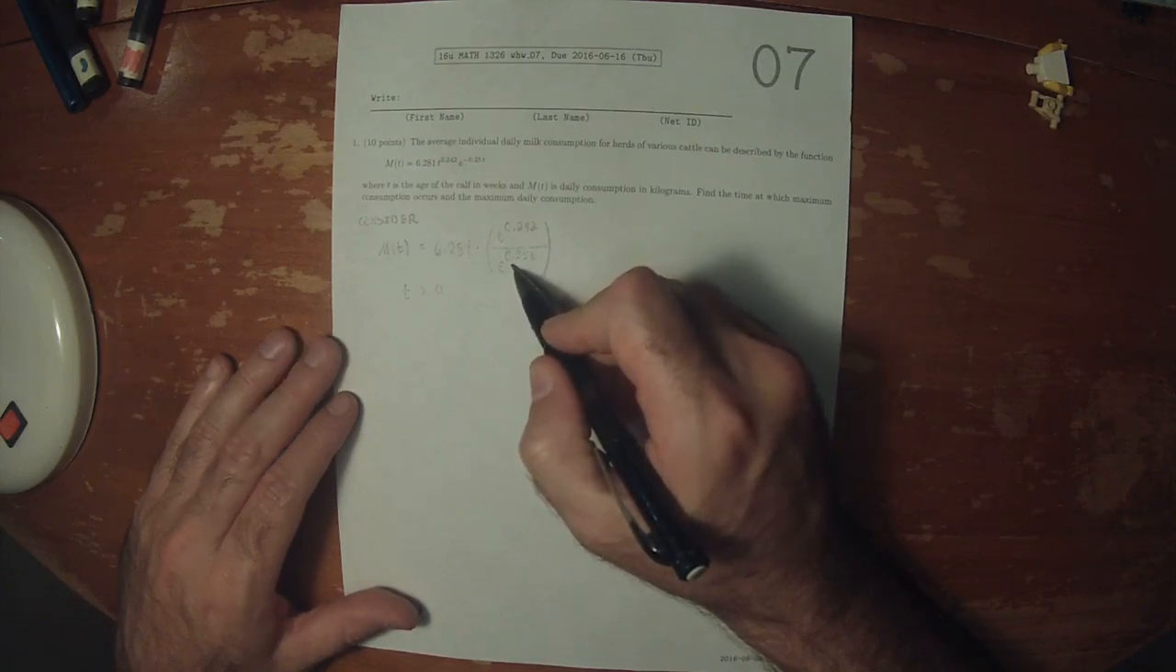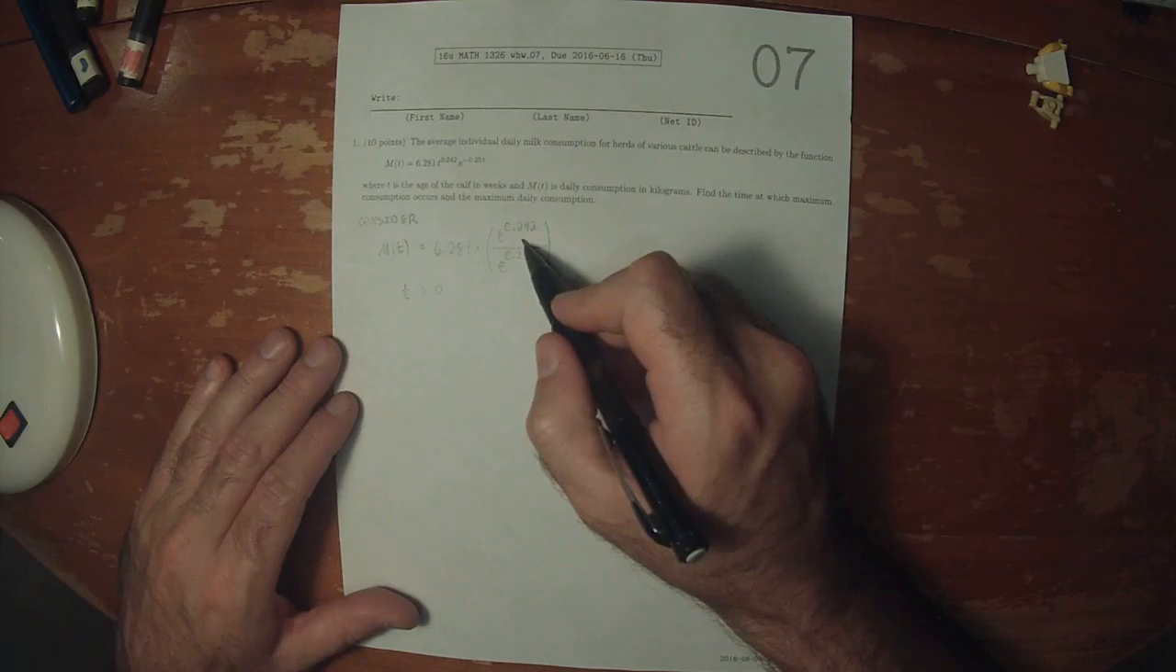This term t to 0.242 is going to grow, at least initially, faster than the exponential term. But eventually the exponential term will grow much faster than this term.